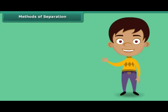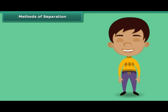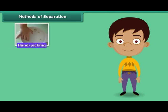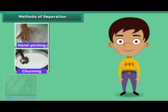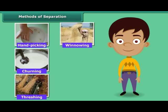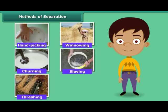You sure would have some idea about the methods of separation. In fact, you would have used some of these methods in your day-to-day life. Let us list some methods commonly used to separate the components of a mixture: hand-picking, churning, threshing, winnowing, and sieving. The basis for choosing a method of separation depends upon the physical properties of the components.